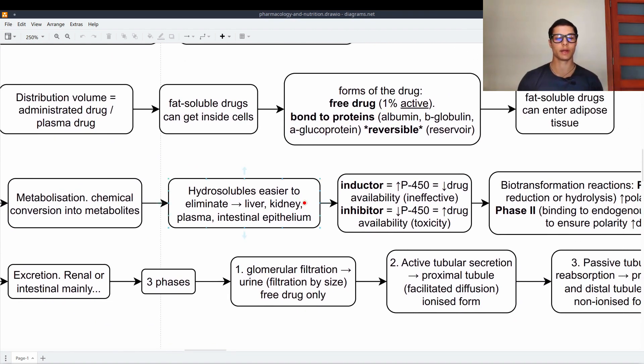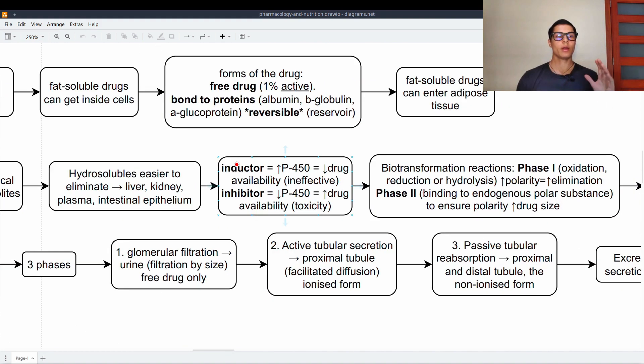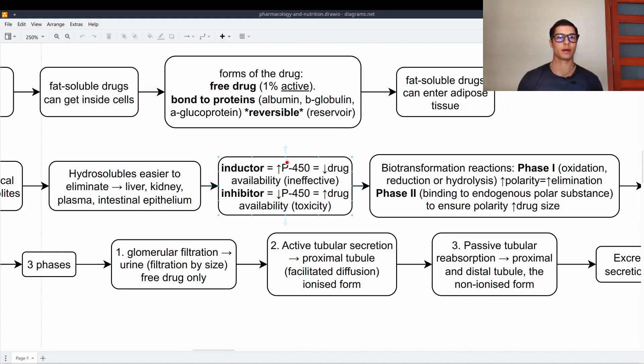Metabolization is the conversion of chemicals into metabolites. Hydrosoluble drugs are easier to eliminate, because we have the liver, the kidney, the plasma and the intestinal epithelium that will easily get rid of them. There is a cytochrome, the cytochrome P450, which is the main responsible for metabolization. An inductor is a substance that increases the activity of the cytochrome P450. Therefore, we have less drug availability and it may lead to an ineffective drug, whereas an inhibitor of the cytochrome P450 will lead to higher drug availability and to toxicity.